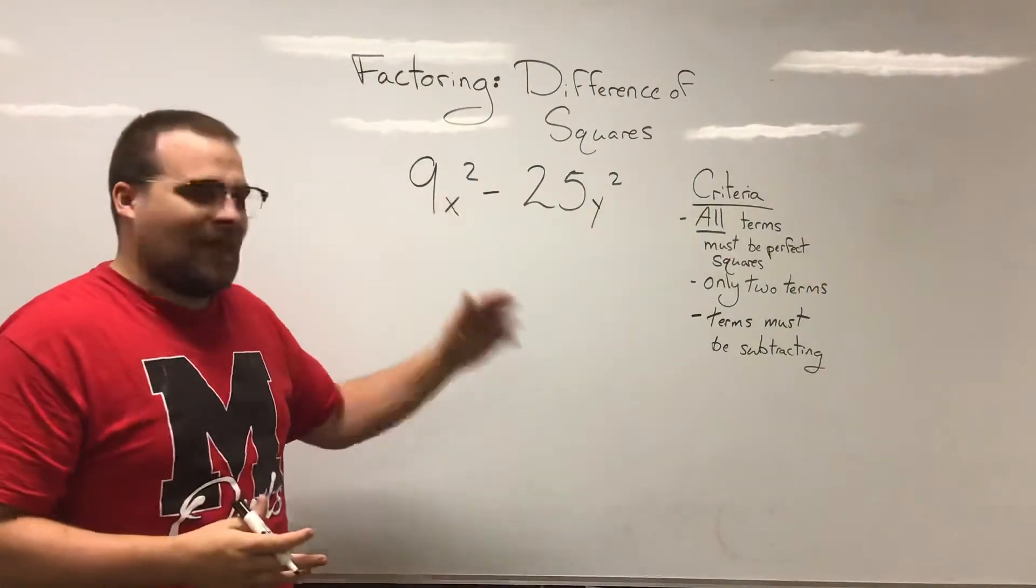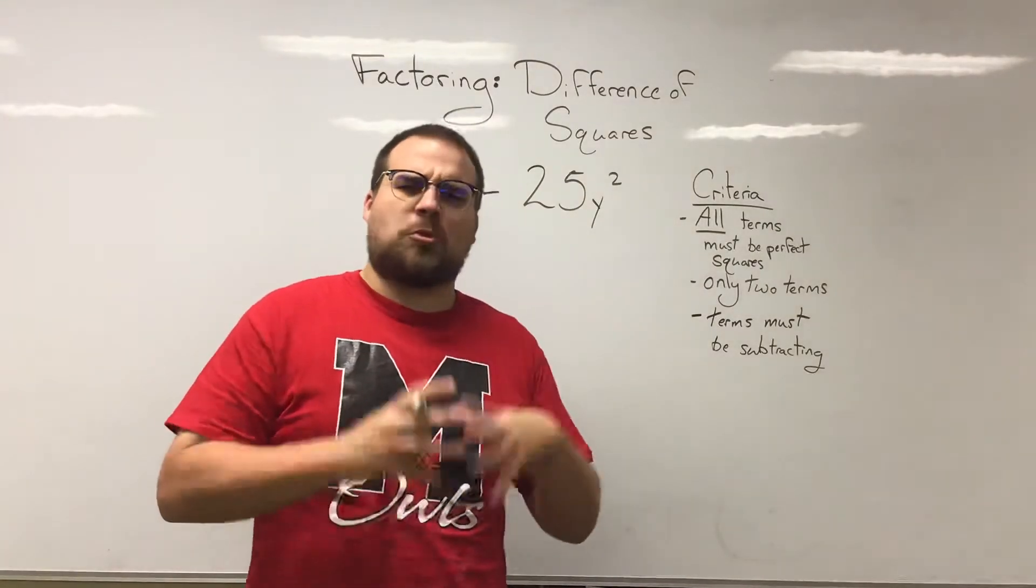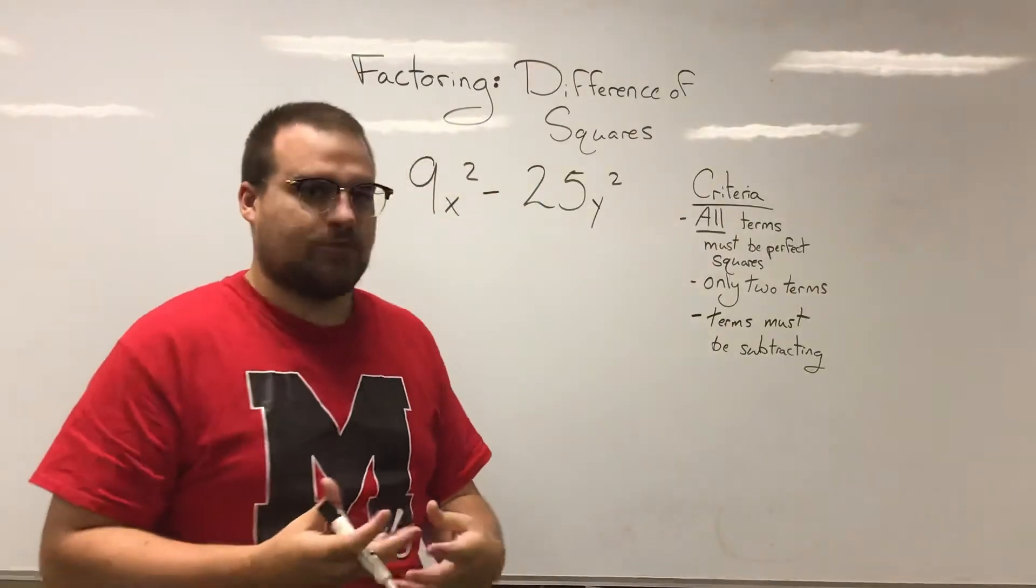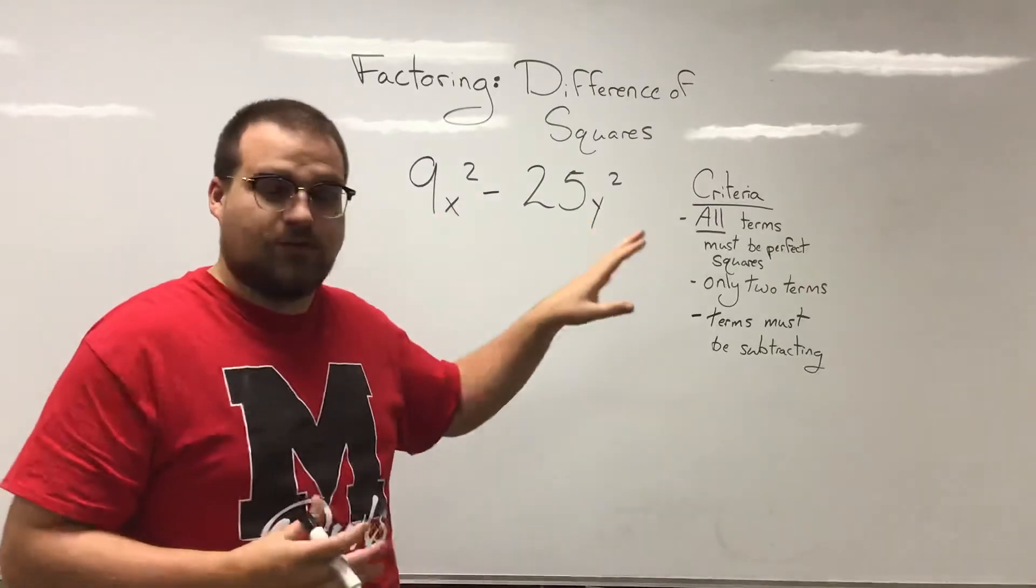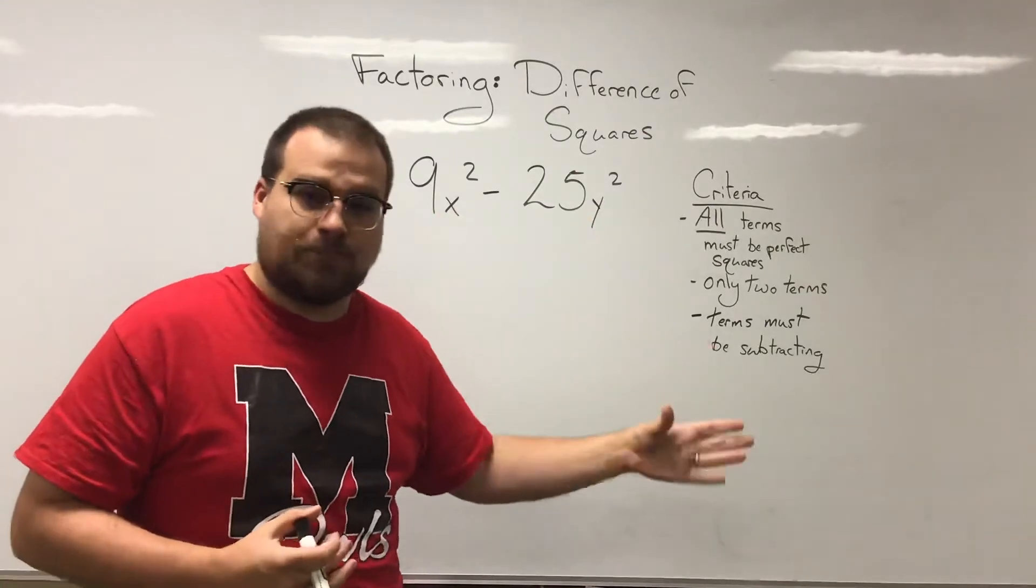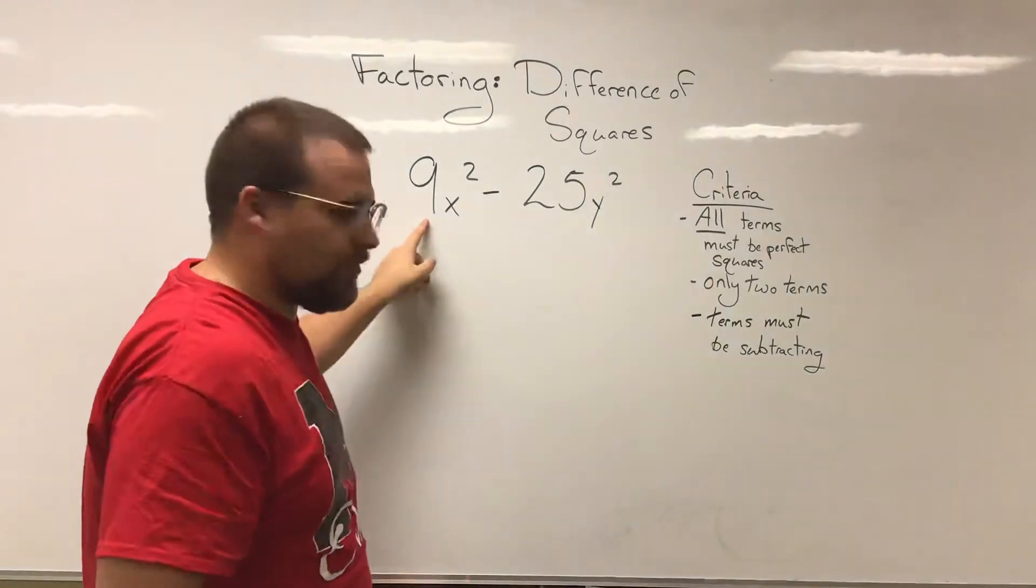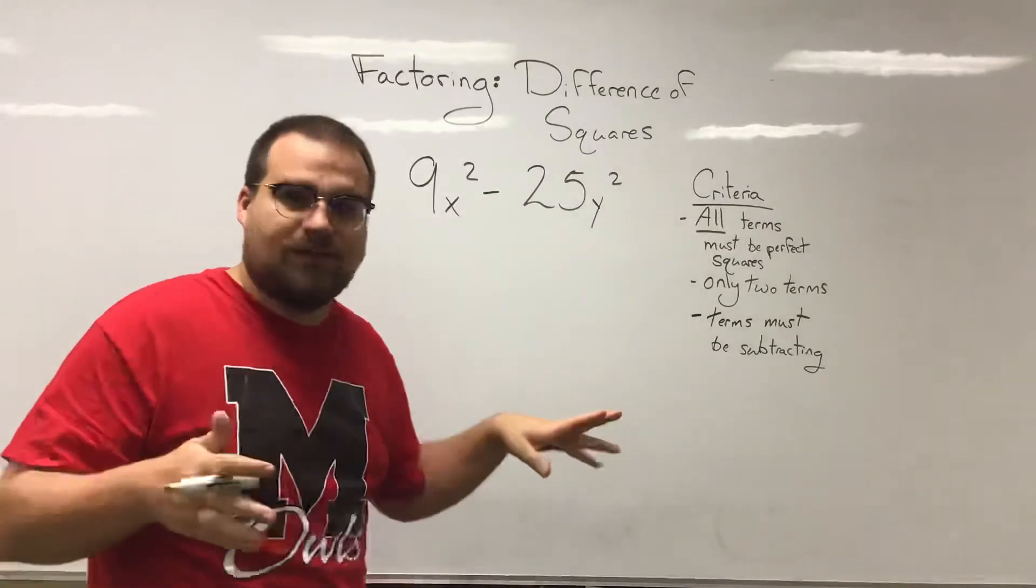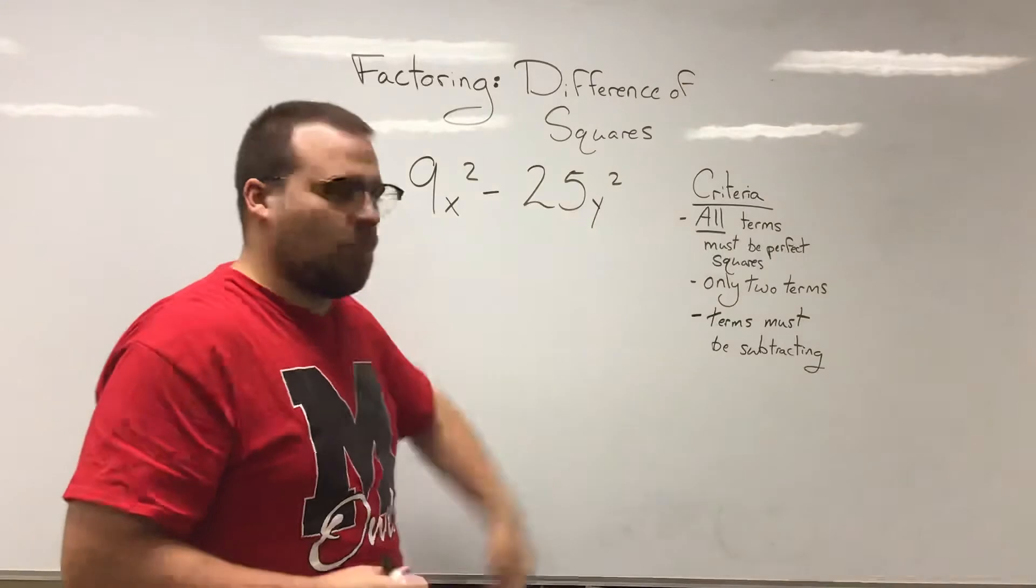And then is everything a perfect square? So you'll notice this one has a little more to it than the other one. It has a few more variables, a few more whole numbers. If we ask ourselves, does each whole number or each variable, is it a perfect square? If it is, we can do this. Is 9 a perfect square? It is. x squared? Great. We said any variable that's squared is a perfect square. 25, absolutely, and y squared.